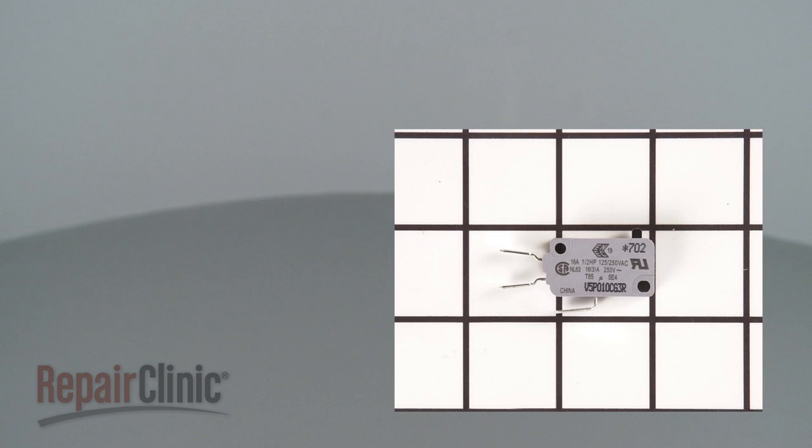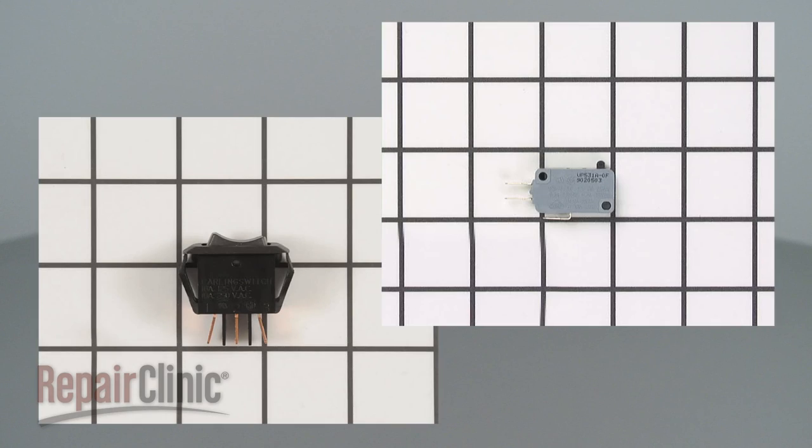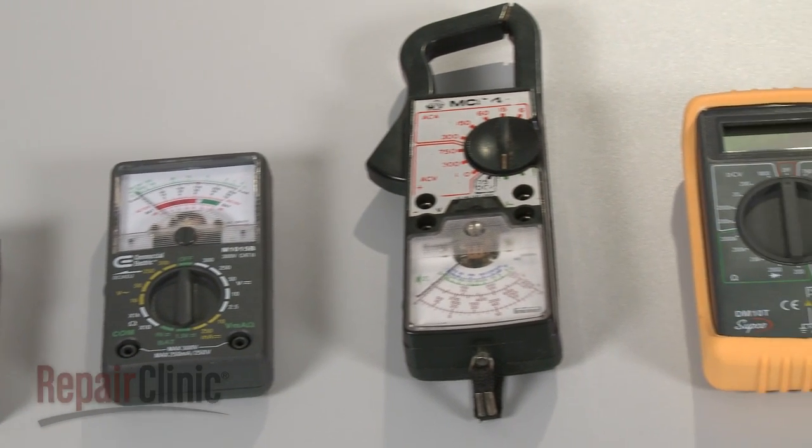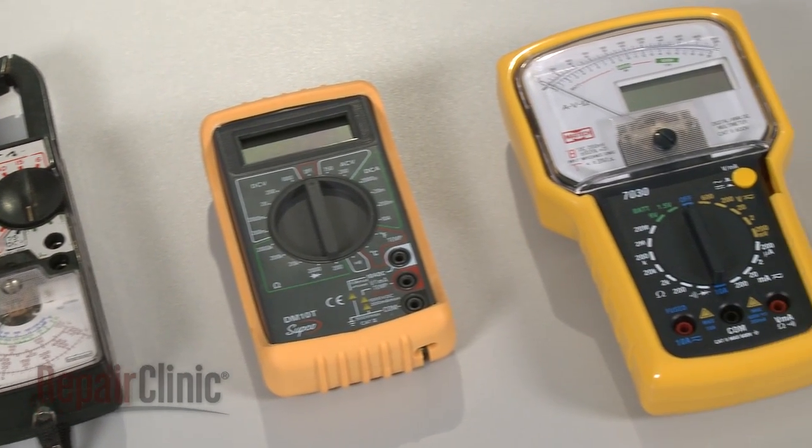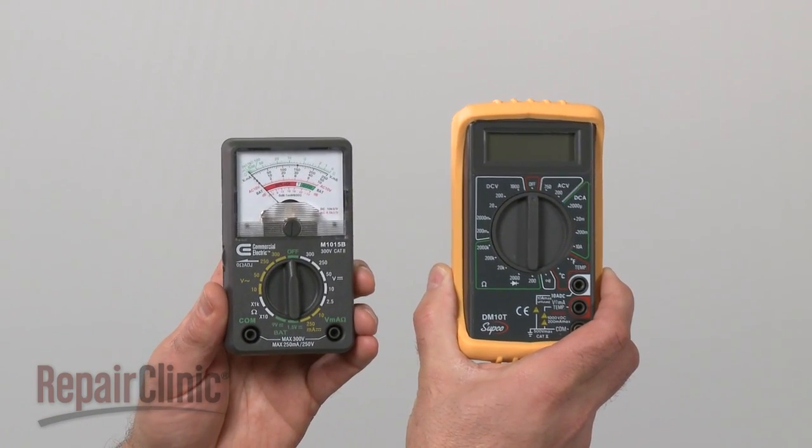Switches come in many shapes and sizes, but all of them can be tested for continuity. You can choose from a variety of multimeters to perform the test. For this demonstration, we will use both analog and digital models.